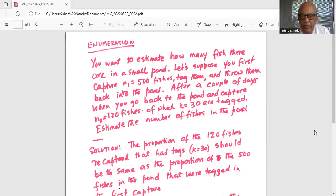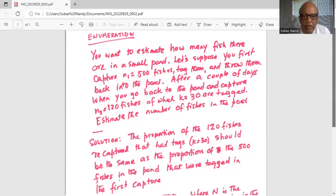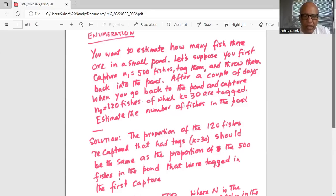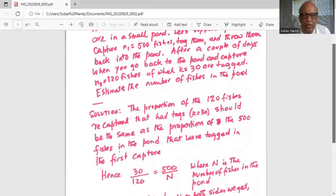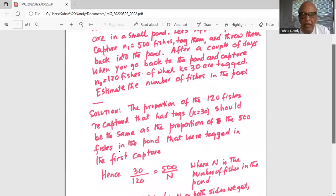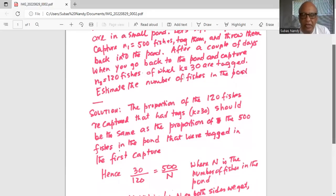Solution. The proportion of the 120 fishes recaptured that had tags k equal to 30 should be the same as the proportion of the 500 fishes in the pond that were tagged in the first capture. Hence, 30 over 120 is equal to 500 divided by N, where N is the total number of fishes in the pond.